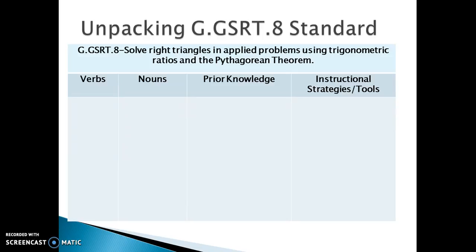Now that you have completed your matrix, let's see if our answers agree. The verbs here are solve and use. Even though 'using' is in the gerund form, students must use the trigonometric ratios and the Pythagorean theorem. So, solve and use.